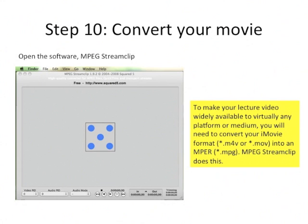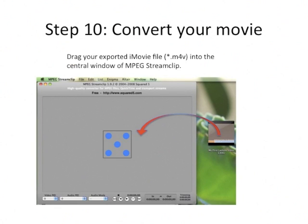Making a movie in iMovie is great, but it's not accessible by many different media platforms. So we're going to create an MPG using another free software — MPEG StreamClip. You'll need to download and install it before you can begin. Then take the movie exported by iMovie and drag it into the central window of MPEG StreamClip.